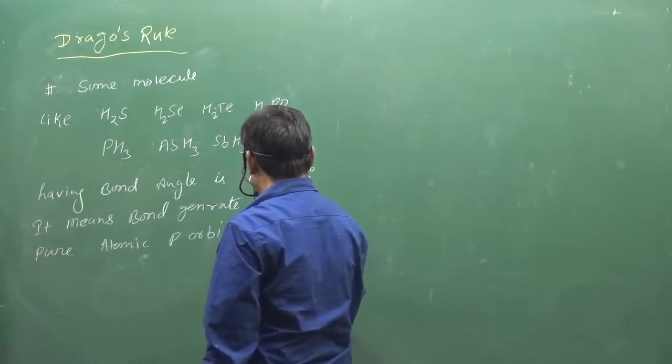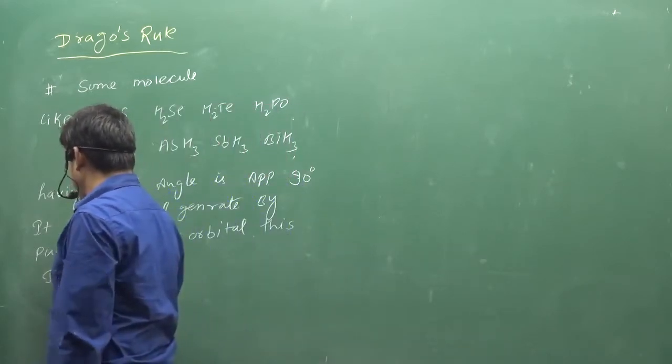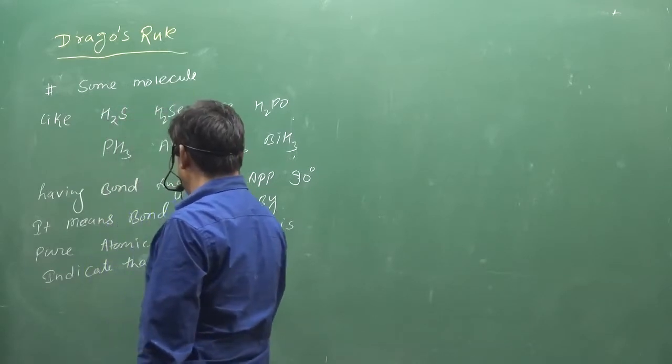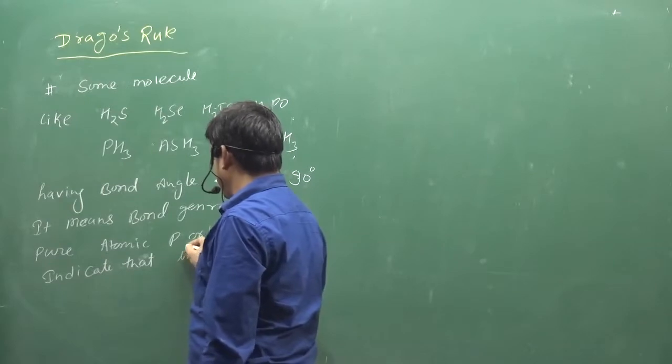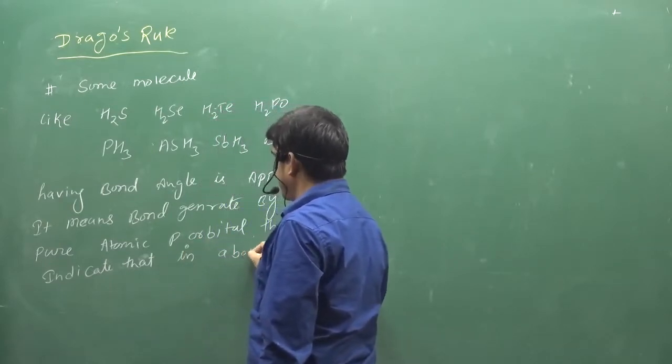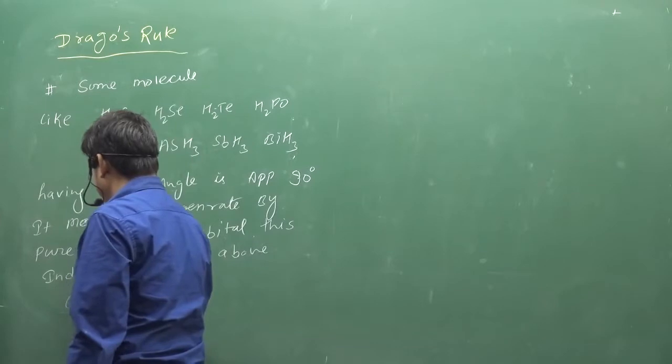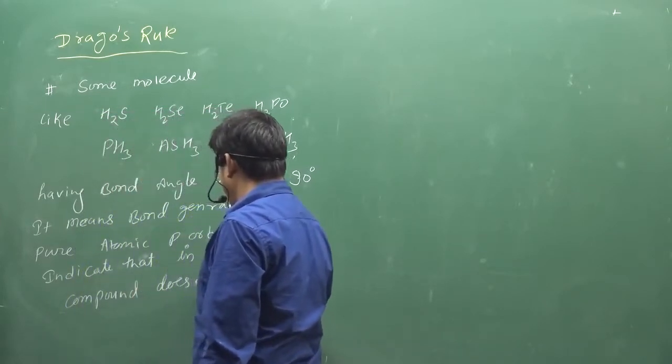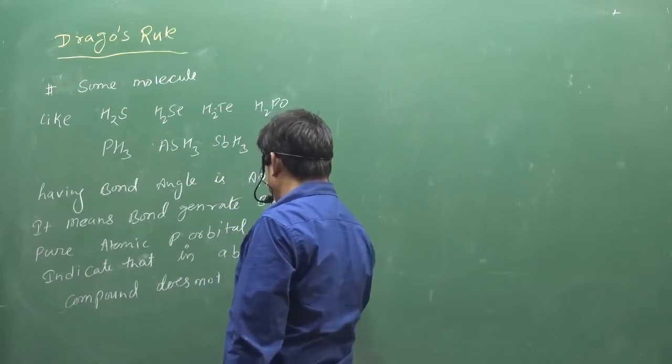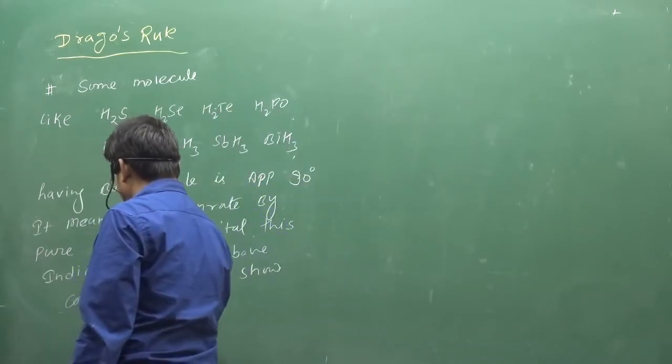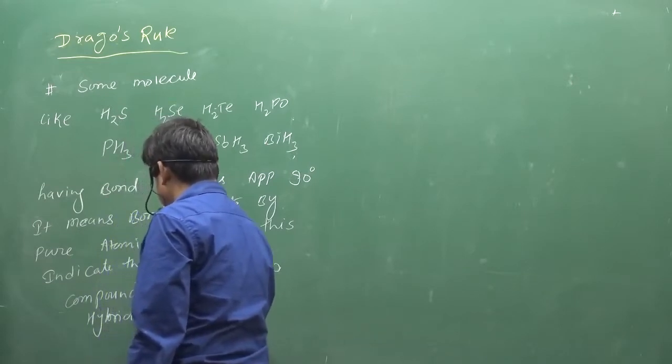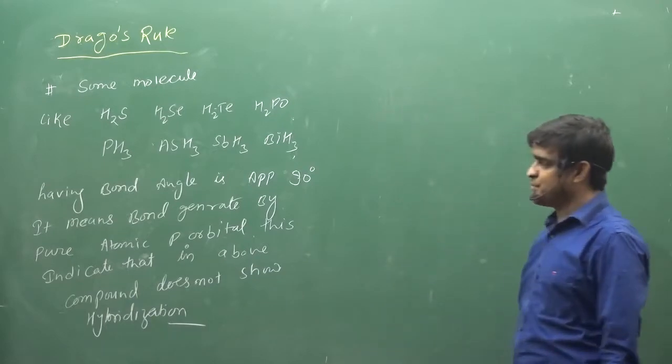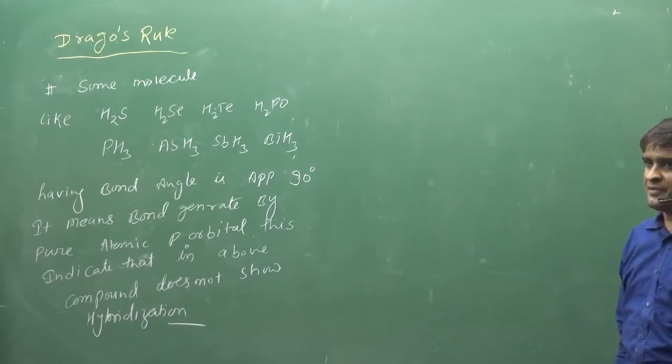This indicates that in above compounds, compound does not show hybridization. And when the hybridization does not happen, why does it not happen? It is not able to explain it, either Drago's or the Vesper theory.